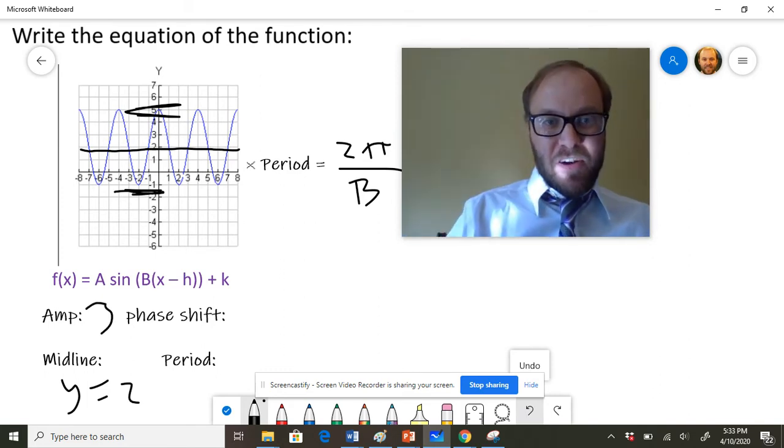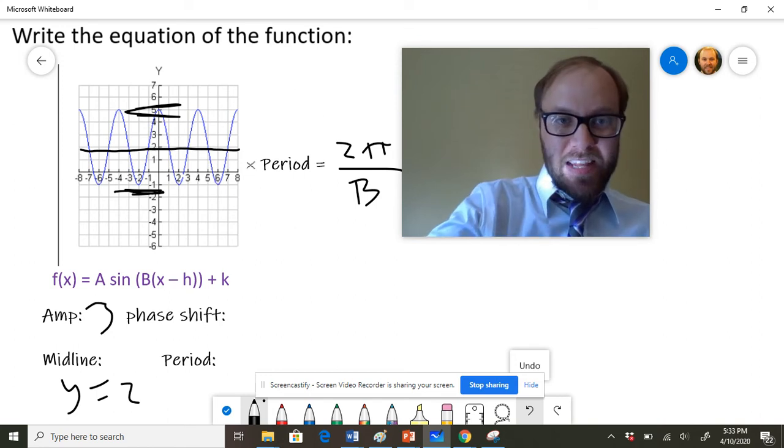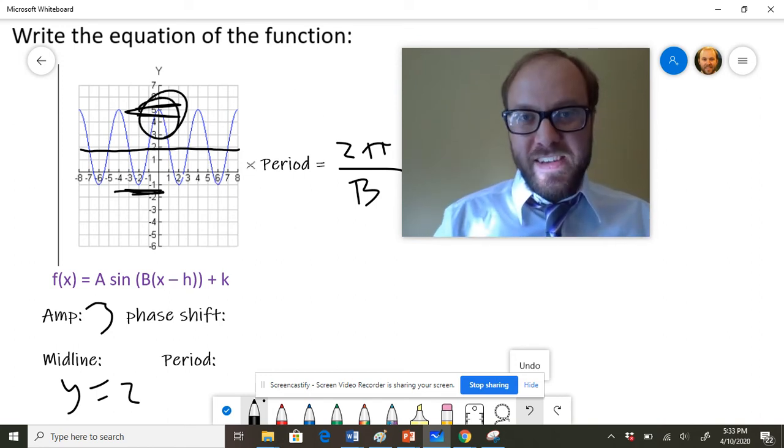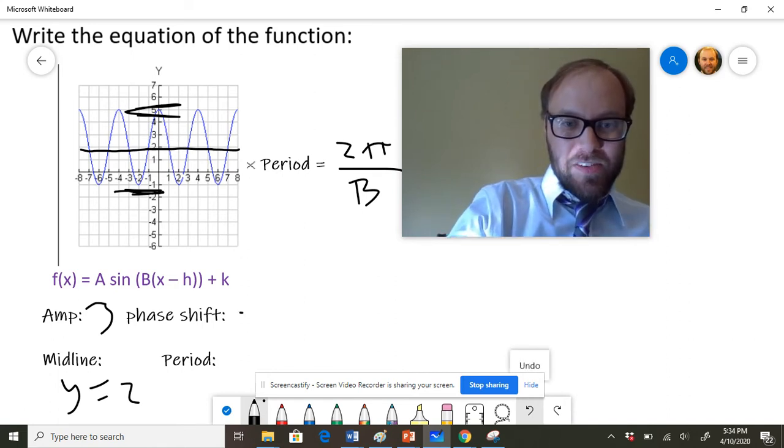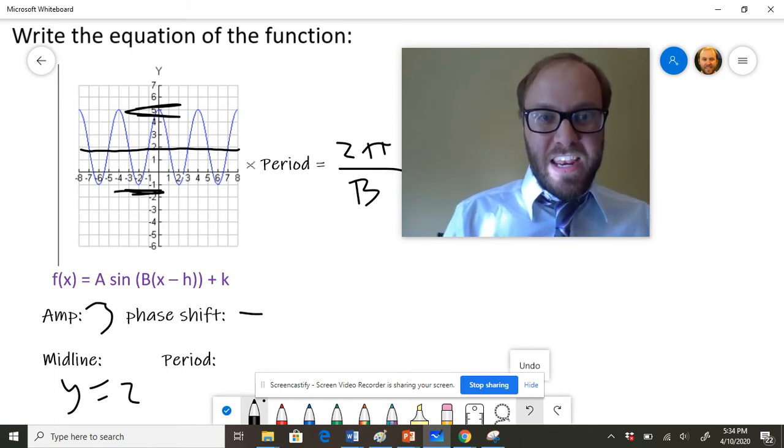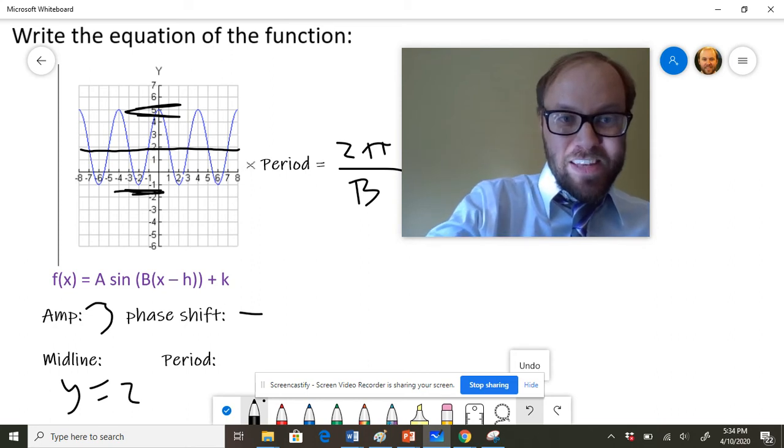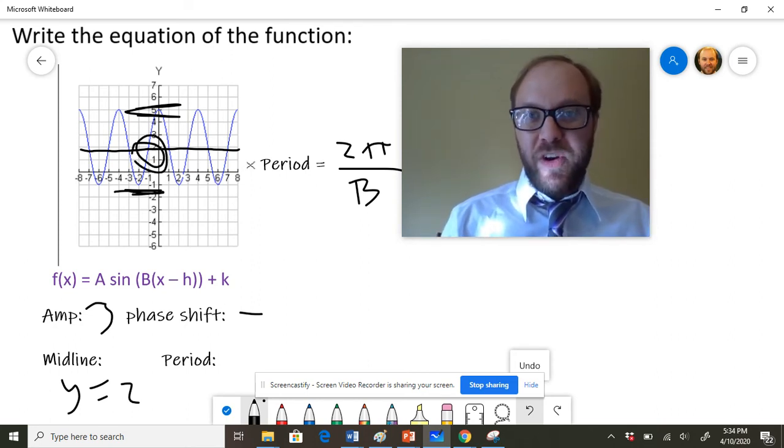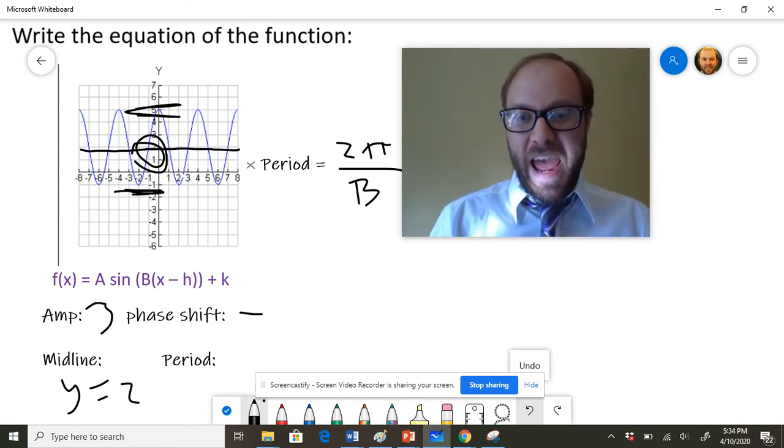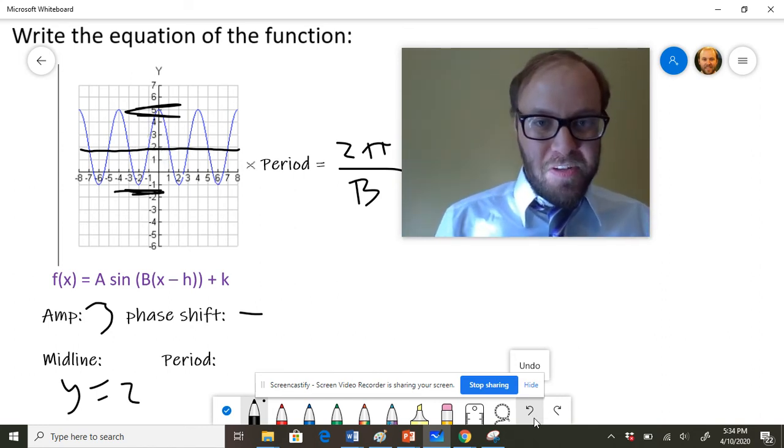Because I'm doing a cosine function here—because it hits a maximum value when x is equal to zero—I'm not going to do any kind of phase shift. So we're just going to take that out. If I did a sine function, I'd have to do a phase shift. I would have to figure out where it hits the midline, figure out what that coordinate was over there, and basically shift it back that amount, which I don't really want to do.